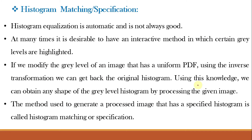In the previous video class we studied histogram equalization, that is histogram flattening, and we concluded that histogram equalization is not always good — it is automatic and non-interactive, always giving only one result: an approximation of a uniform histogram. Many times it is desirable to have an interactive method in which certain gray levels are highlighted. If we modify the gray level of an image that has a uniform PDF using the inverse transformation, we get back the original image.